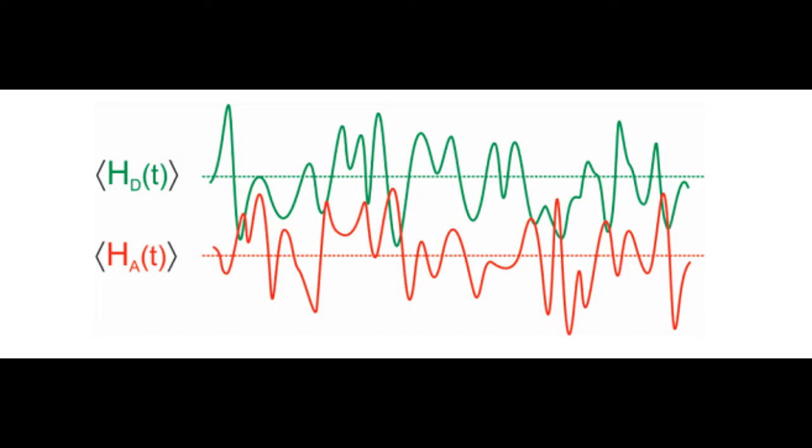This model, in tandem with Marcus theory, can more accurately describe electron transfer rates at low temperatures. Tunneling occurs during vibrational wave function overlap and allows electron transfer rates to be higher than expected classically at those lower temperatures.